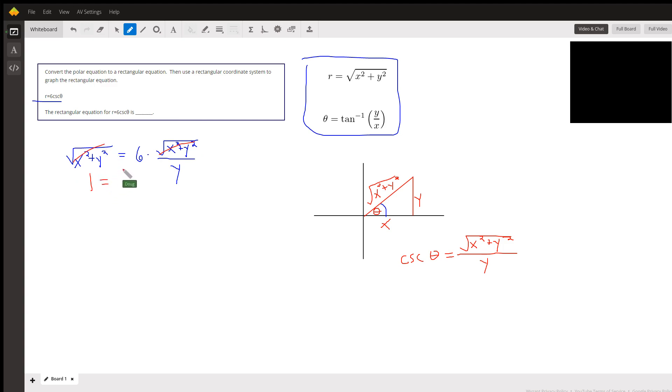So we got 1 equals 6 over y, so y equals 6 is your rectangular equation.